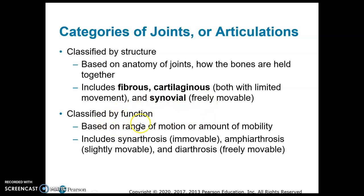When classified by function, we classify joints based on range of motion. A synarthrosis is immovable, an amphiarthrosis has slight movement, and a diarthrosis is freely movable. One thing to remember: a synovial joint is always a diarthrosis joint.